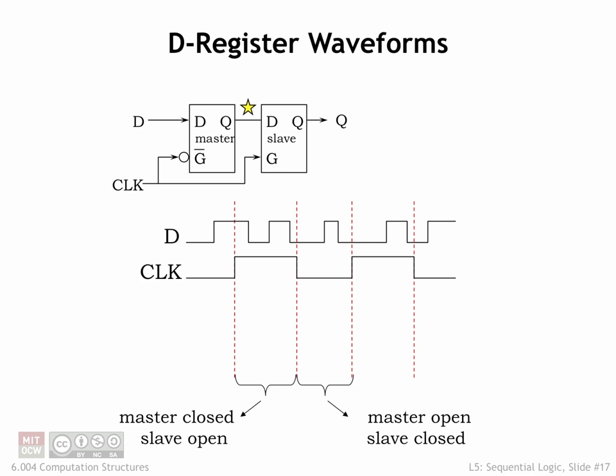We'll get a good understanding of how the register operates as we follow the signals through the circuit. The overall operation of the register is simple. At the rising 0 to 1 transition of the clock input, the register samples the value of the D input and stores that value until the next rising clock edge. The Q output is simply the value stored in the register.